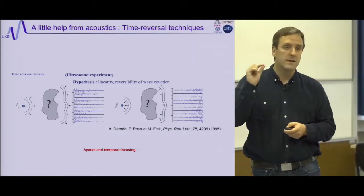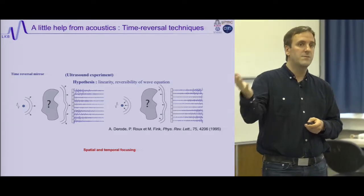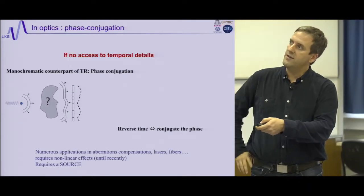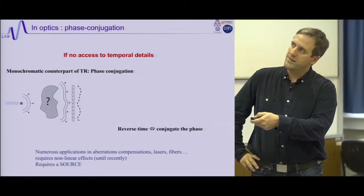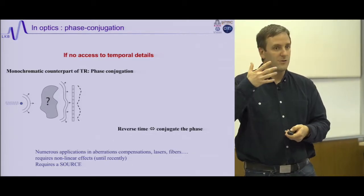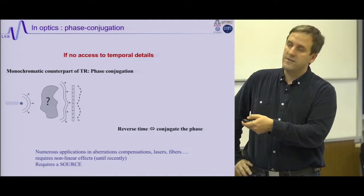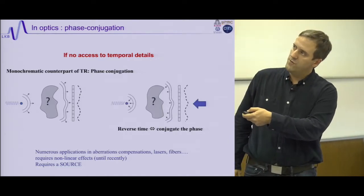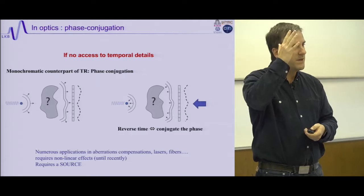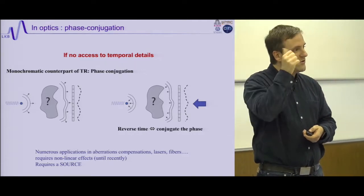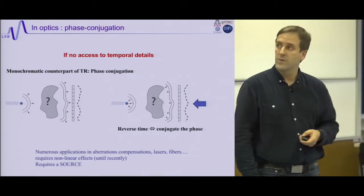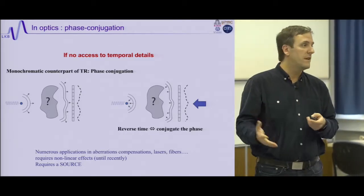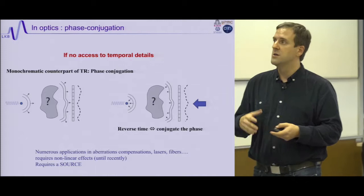You achieve spatial and temporal focusing on the source by playing backward the signal you recorded. With monochromatic light, reversing time means changing the sign of the phase — this is called phase conjugation. If you phase-conjugate the recorded wave (same pattern but with sign of phase reversed) and display it, the wave will refocus on the source. Phase conjugation is used in many fields, including high-power laser correction, but it requires a source — you need a source to produce the signal you will phase-conjugate.